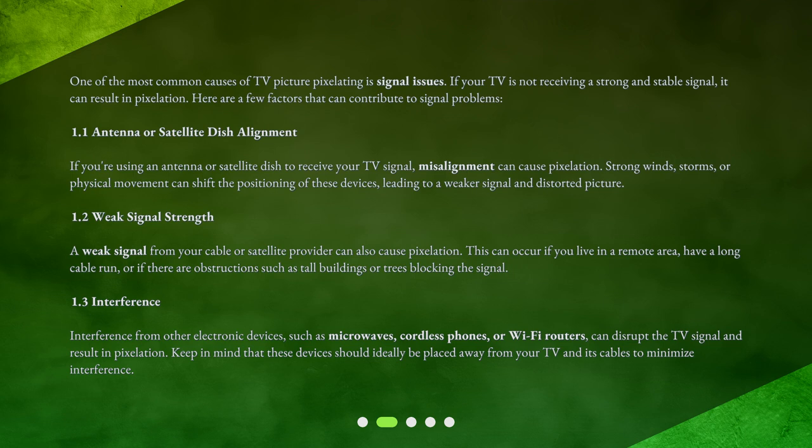Weak Signal Strength: A weak signal from your cable or satellite provider can also cause pixelation. This can occur if you live in a remote area, have a long cable run, or if there are obstructions such as tall buildings or trees blocking the signal. Interference from other electronic devices, such as microwaves, cordless phones, or Wi-Fi routers, can disrupt the TV signal and result in pixelation. These devices should ideally be placed away from your TV and its cables to minimize interference.